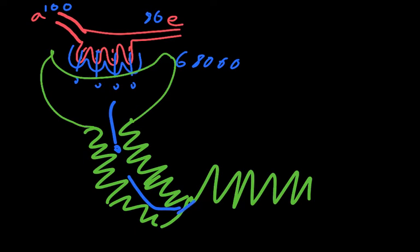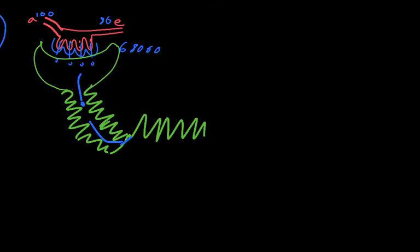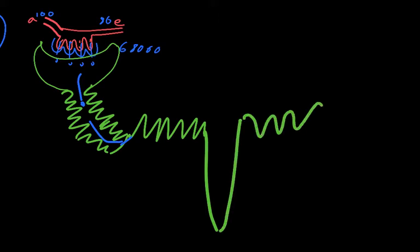It then goes down the descending limb of the loop of Henle, up the ascending limb of the loop of Henle, through the distal convoluted tubule.